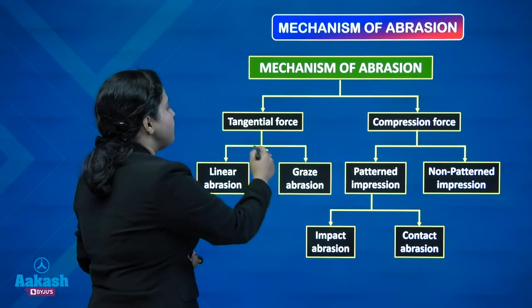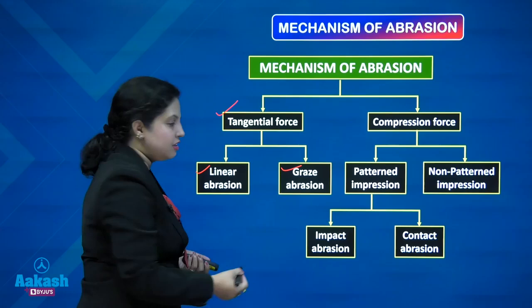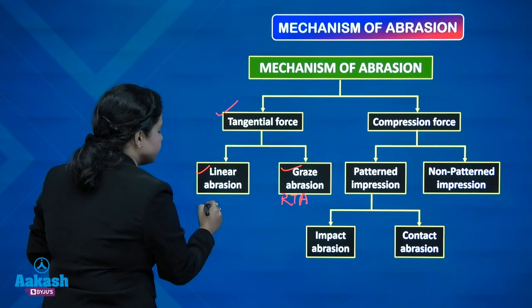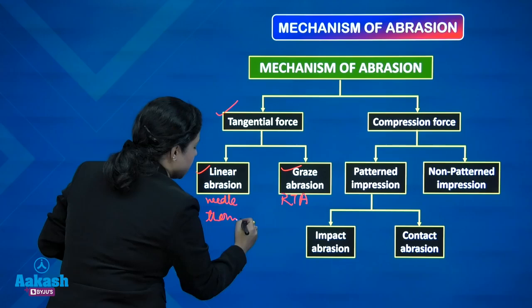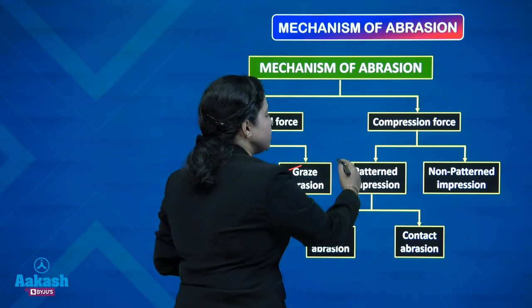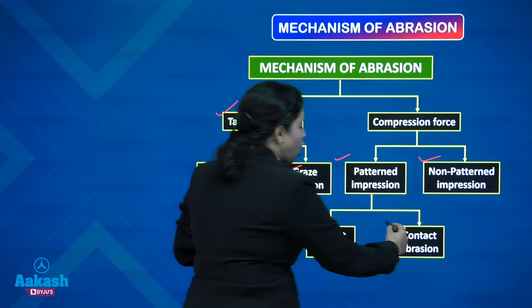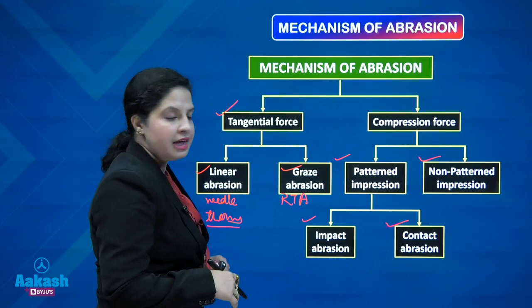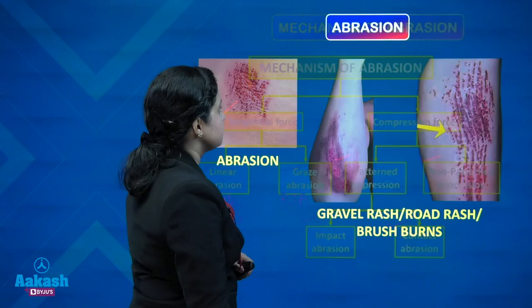The mechanism of abrasion decides the type of abrasion. A tangential force can cause a linear abrasion or a graze abrasion — graze abrasion most commonly encountered in road traffic accidents, linear ones caused by a needle or thorn. A compression force can cause a patent as well as a non-patent impression; patent examples include radiator grills, headlamp rims of a motor vehicle, and teeth or bite marks.